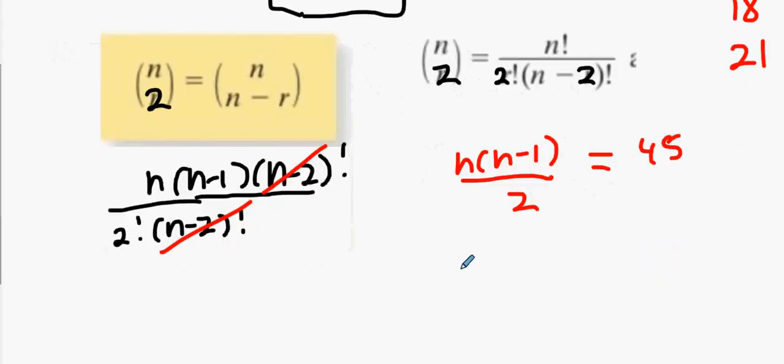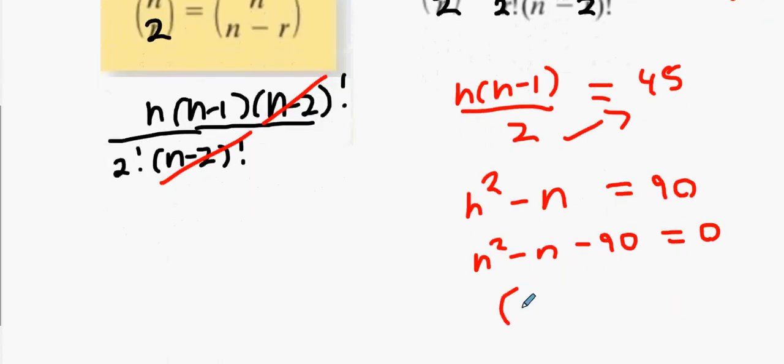Multiply it out. You get n squared minus n equals 90. Just bear with me for a second. And then what we should get is it has to be a positive answer. It can't be negative. So, there he is. It's n equals 10.